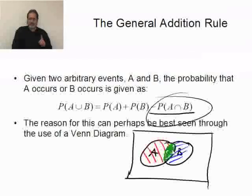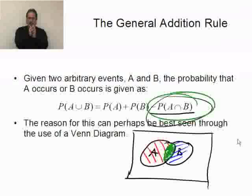I only want it once for A or B. I can't count something twice. So if I subtract it off once, then what I end up with is that joint area included in the calculation only once, not twice. That's the reason we have to subtract this off.